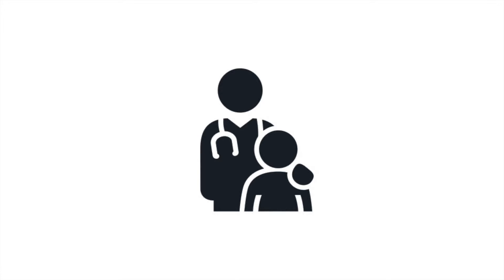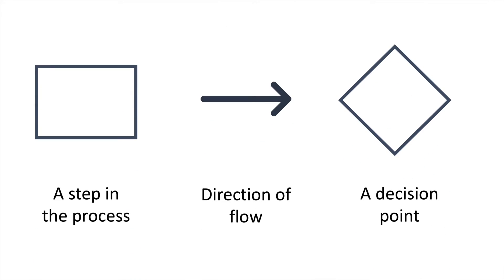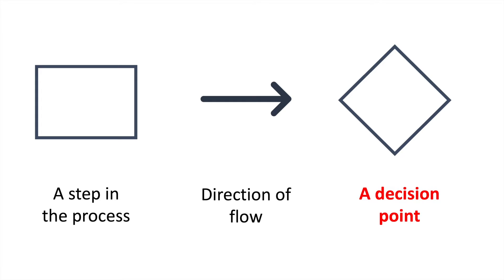All you need is boxes, diamonds, and arrows — where boxes are each step in the process. Arrows show the direction of flow, and the diamonds are decision points where the process can move in one direction or the other based on the conditions.